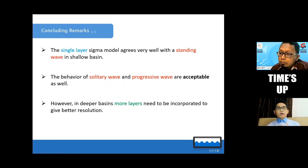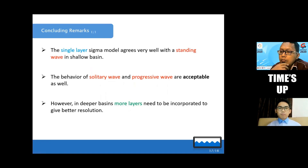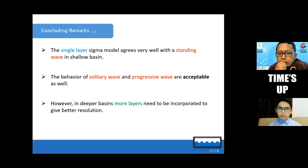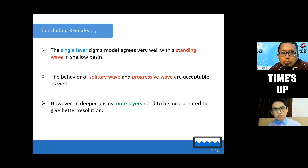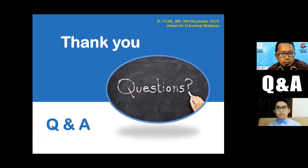In conclusion, what we have done so far is only the single-layer sigma model, meaning the whole depth is modeled with only one cell. Despite that, we are getting very good results in shallow waters, but for deep waters we have some variation. We believe we can get better results by increasing the number of layers, which is the future work, as this research is still in progress. Thank you very much for your attention.